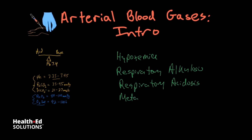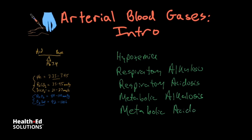Next I'll talk about metabolic alkalosis — causes when the pH is too high, typically due to issues with the kidneys or ingestion of toxic substances. And then in the final video I'll cover metabolic acidosis, including derangements of the kidneys, endogenous acids that come from within the body, and acidosis caused by toxicity.